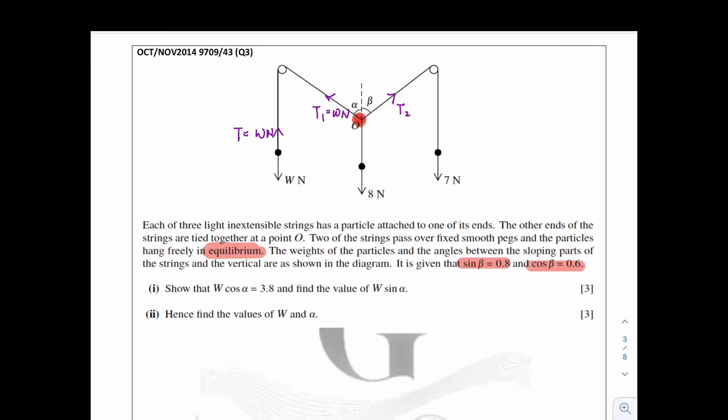The same thing goes to this particle. This particle is being pulled downwards by 7 newton. At the same time, it's being pulled upwards by the string. So the tension upwards, which is T2, is actually equal to 7 newton. Because this particle is not moving up or down, it is in equilibrium. So upward force equals to the downward force. So T2 is actually equal to 7 newton. That's how we figure out the forces of the tensions here. And the downward force is 8 newton.